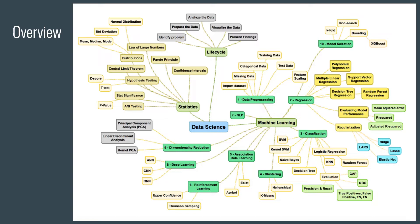CNN, RNN, LSTM, GRU, Pareto Principle, Law of Large Numbers, Decision Tree, A priori, SVM — the list goes on, making a newcomer overwhelmed just looking at the number of concepts to be learnt. But trust me, each of these are quite easy to understand and simple to learn.